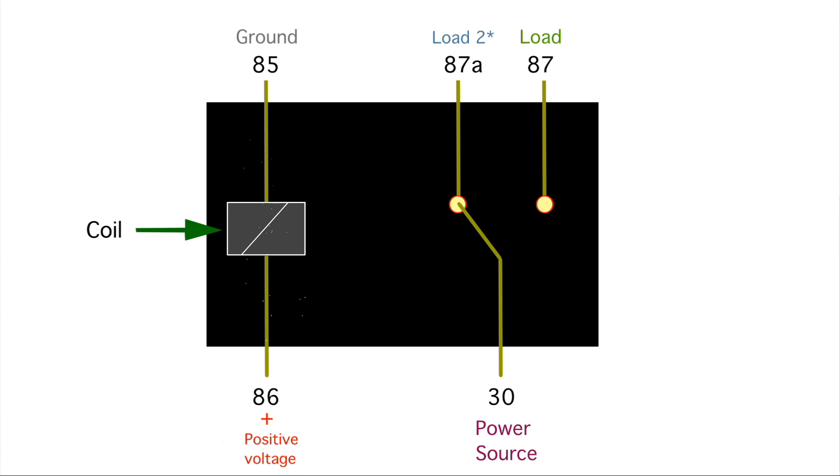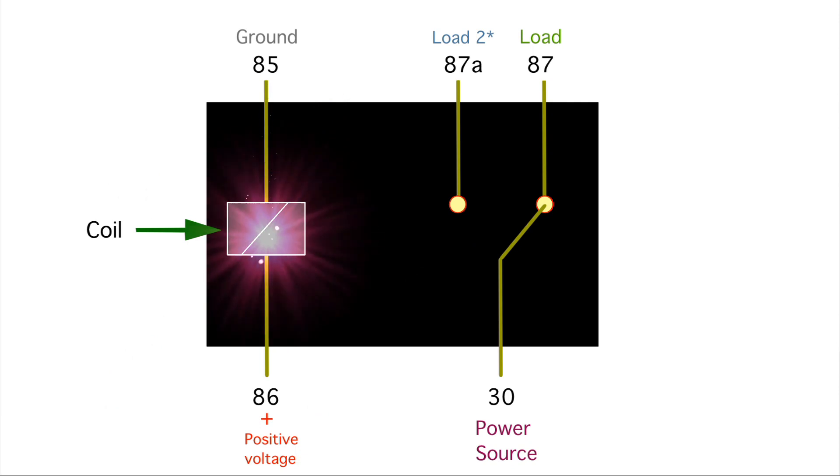If we de-energize the relay, the pin comes back to 87A. As a general rule, when the relay is de-energized you have continuity between 30 and 87A. When you energize the relay you have continuity between 30 and 87.